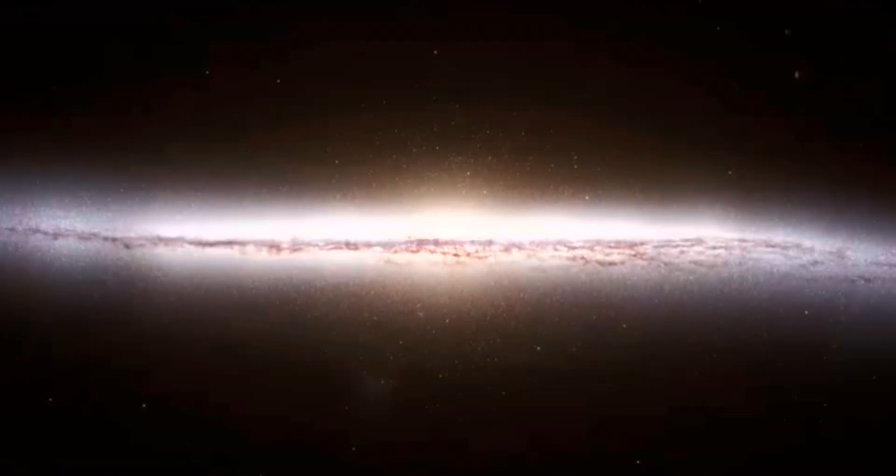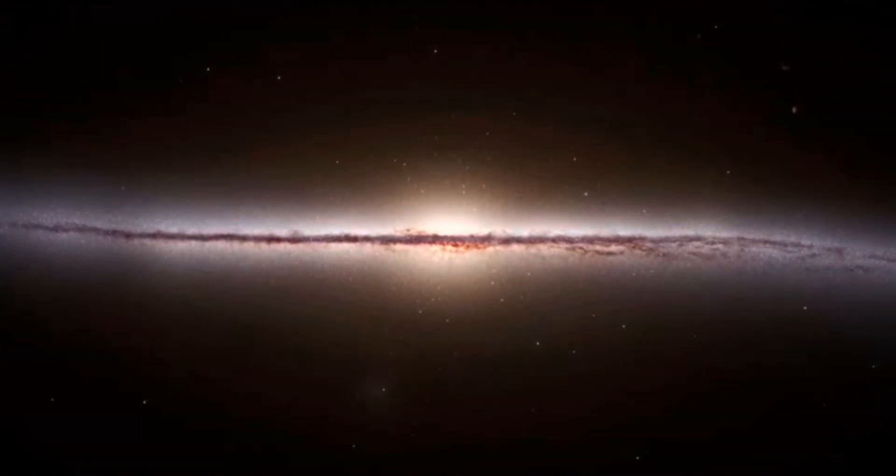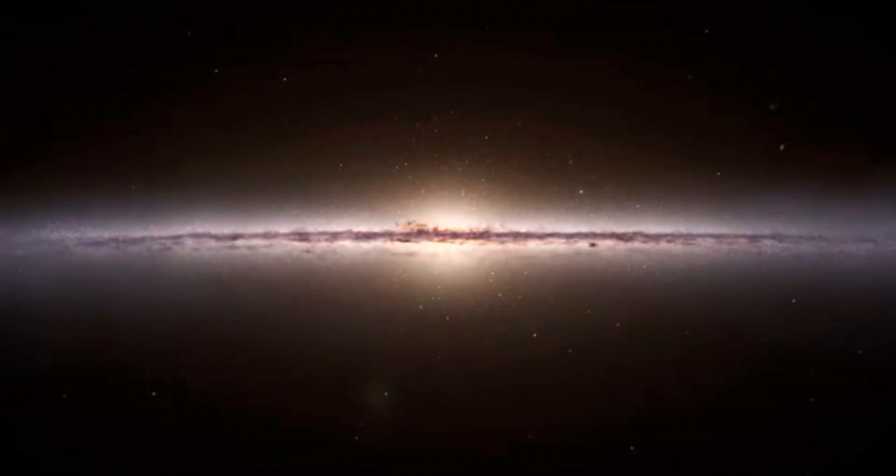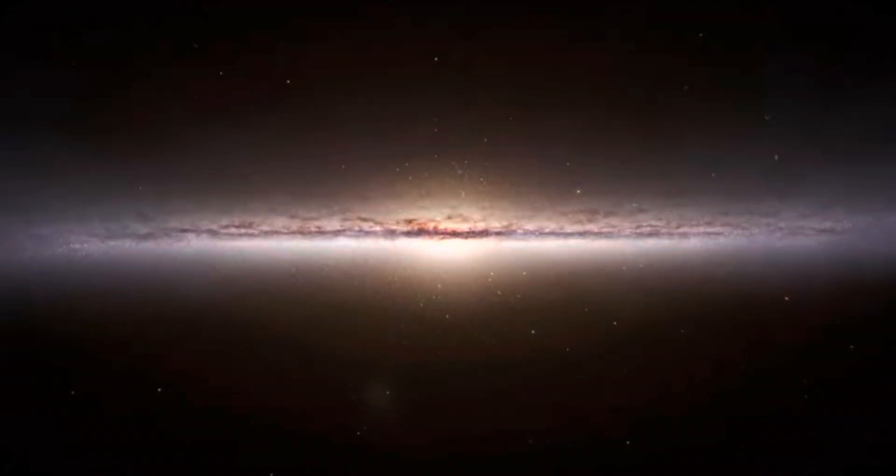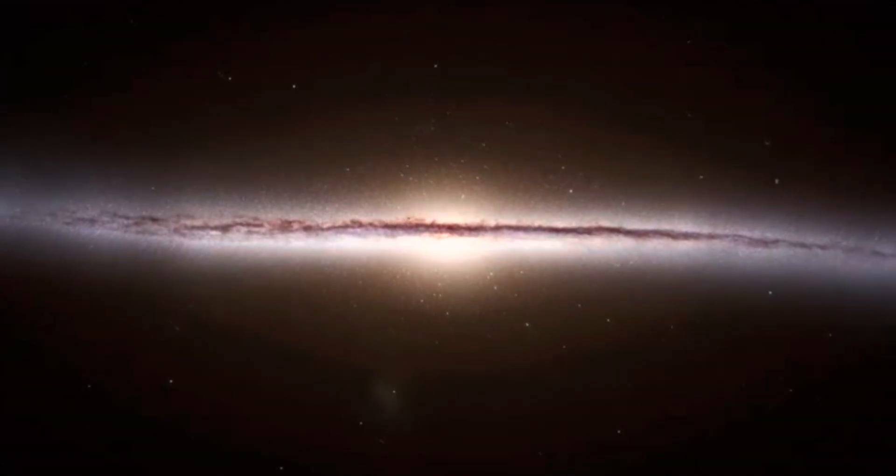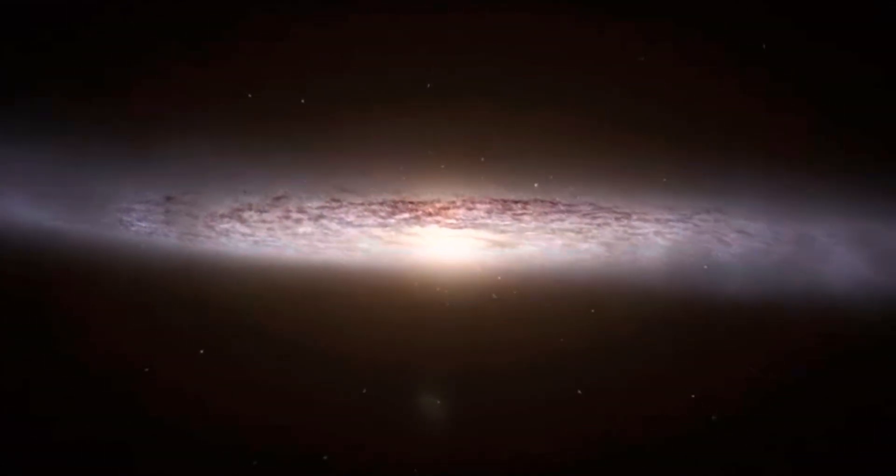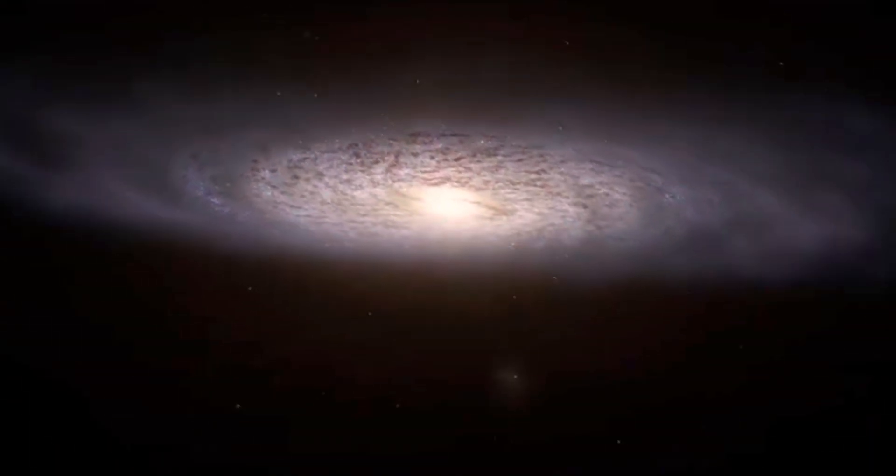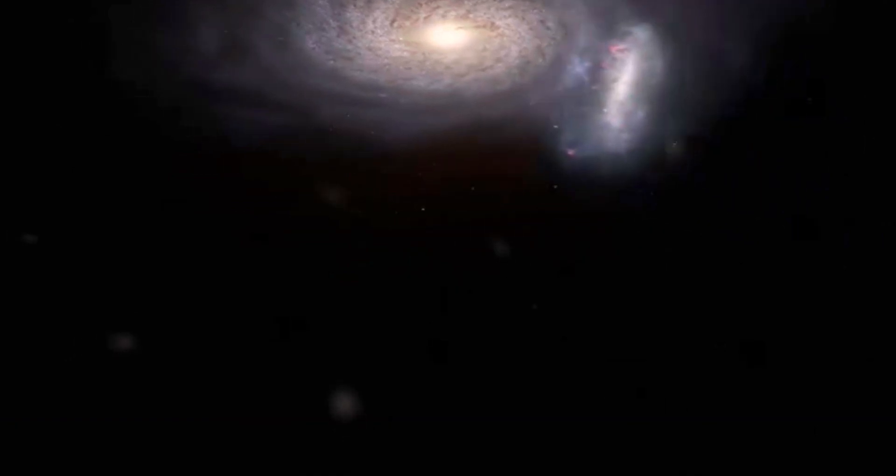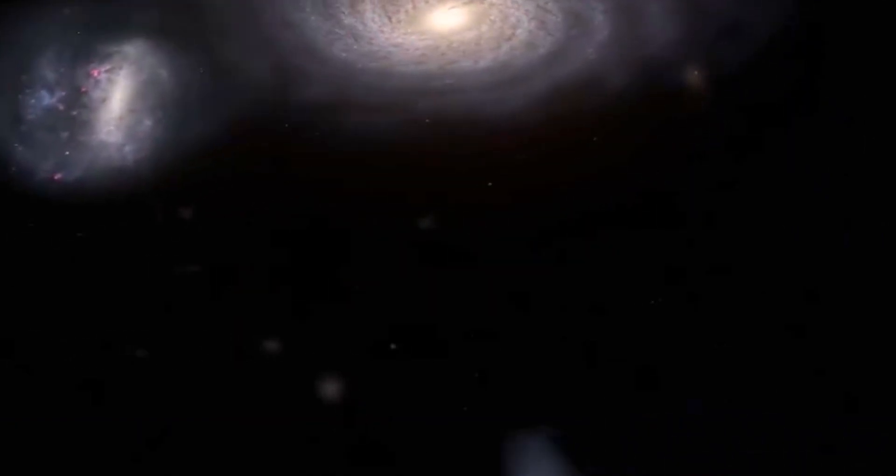What Gaia just gave us isn't a sketch. It's a full-scale, high-resolution map of our galaxy, built from hard data. For the first time, we can actually trace the spiral arms of the Milky Way. We can see the shape of the galaxy's central bar, the dense, glowing stretch of stars at its core. And we now know that the galaxy's disk, where most of the stars are, is warped, like a vinyl record left in the sun.